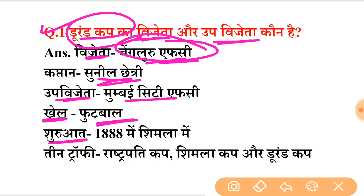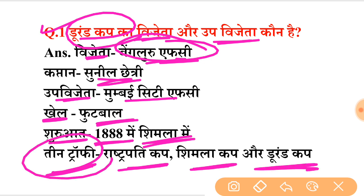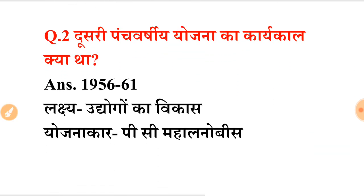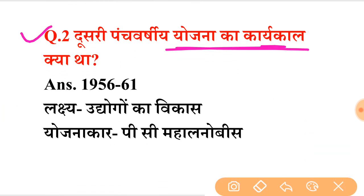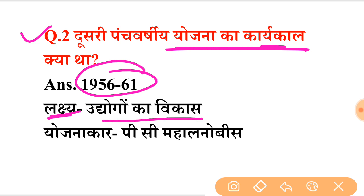The Durand Cup — when did it start? There are three trophies in this football competition. The next question was about the consecutive five-year winner, which was from 1956 to 1961. This was the main point asked about the Durand Cup winner.